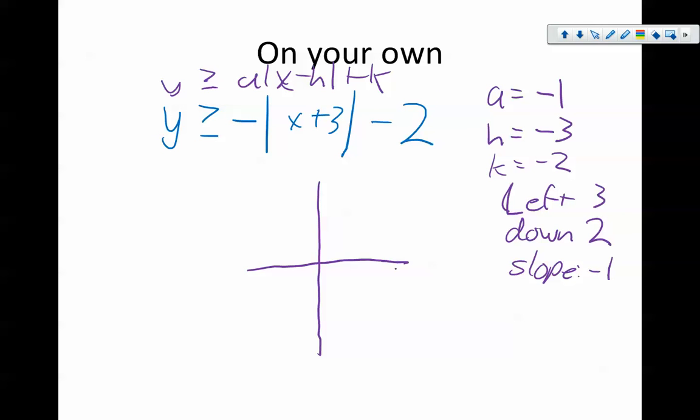Left 3, down 2, slope negative 1. Same thing on the other side. Solid line because it's an equal to, and the y is greater than this line.